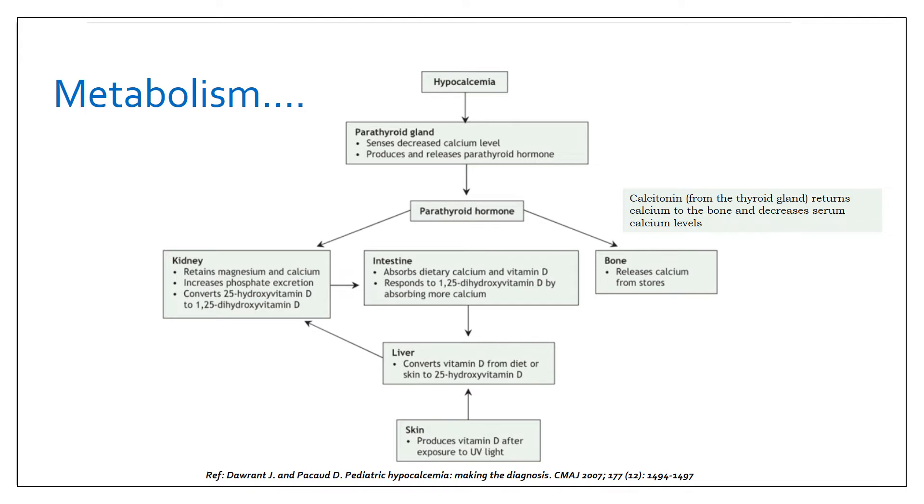You must also have a fair idea about the metabolism of calcium in the body. The metabolism is mainly governed by three hormones: first is the parathyroid hormone from the parathyroid glands, second is the calcitonin hormone from the thyroid gland, and third is vitamin D which is produced in the skin.